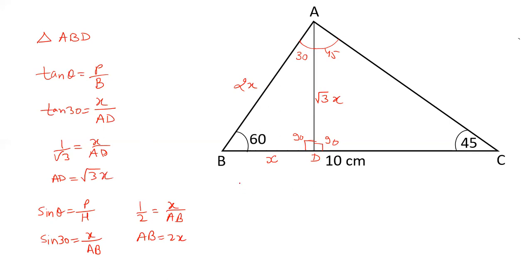For triangle ACD, tan 45 equals P over B, which is AD over CD. Since tan 45 equals 1 and AD equals root 3x, CD equals root 3x.